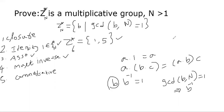Commutativity is clear because we can multiply two numbers in different orders and get the same answer. This is also true in modular arithmetic. So we have proved all of these except closure, which is a little bit involved. Let me show you now the closure property.